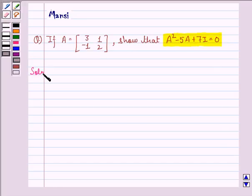So let us start with the solution to this question. Here A is equal to the matrix [3, 1; -1, 2]. Now we see that,